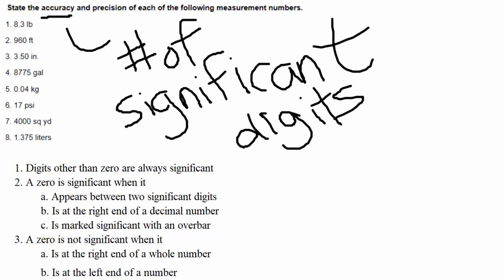I have our rules here on screen. The first rule says digits other than zero are always significant. So anything that's not a zero — one, two, three, four, five, six, seven, eight, nine — those will always be significant. The only ones that might not be significant are zeros; sometimes they will be, sometimes they won't. Bullet point two will help us with part of that.